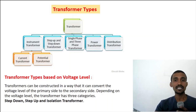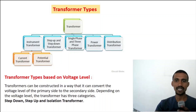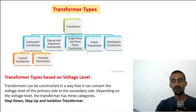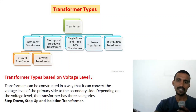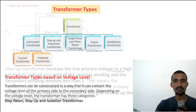Next, transformer types based on voltage level. The transformer can be constructed to convert the voltage level from the primary side to the secondary side. Depending on the voltage level, there are three categories: step-up transformer, step-down transformer, and isolation transformer.